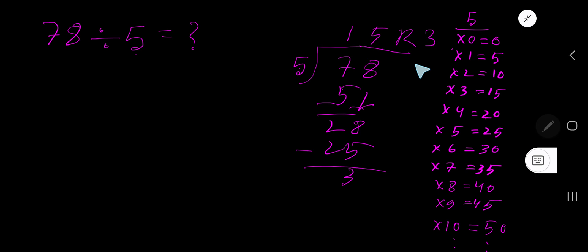If you want to write your answer in decimal form, then add a decimal and zeros. Bring down the first 0. Put the decimal in your answer directly above.